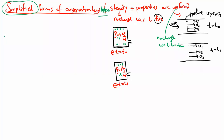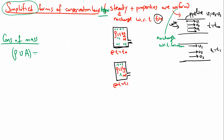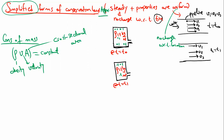With these approximations I'll first write the conservation of mass. For conservation of mass, the three properties - density ρ, velocity v, and area A - their product is constant: ρ·v·A = constant. Here ρ is density, v is velocity, and A is cross-sectional area.